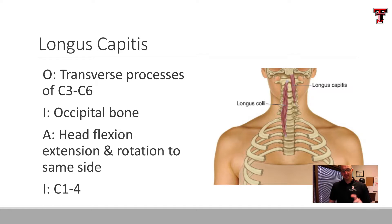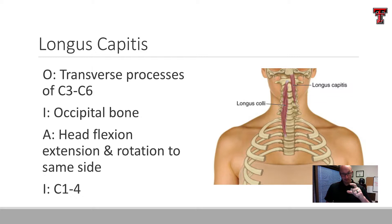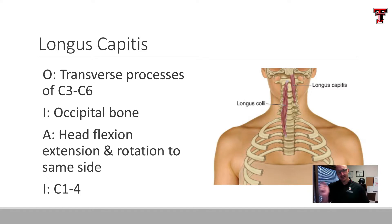Longus capitis, as the name implies, is longer. Anytime we see 'capitis,' think skull or head. It originates on the transverse processes of C3 through C6 — the midsection of the cervical spine — and also inserts into the base of the skull at the occipital bone. It too is going to be a head flexor, since it's anteriorly located, and a rotator to the same side. As it descends down the cervical spine, it gets its innervation through corresponding levels of the cervical nerve roots C1 through C4.